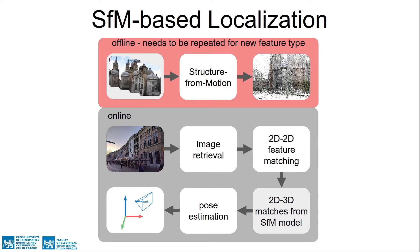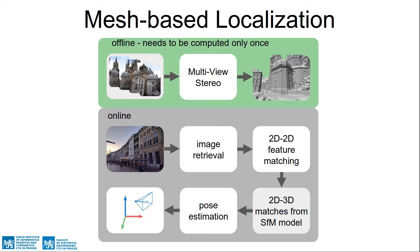In the case of changing the local features to another type, the structure-from-motion based pipeline needs to recompute the whole scene representation, including the expensive matching step between the database images. In the case of a mesh-based pipeline, the representation can be kept even when the feature type changes. The only part that changes is the lifting of the 2D matches to the third dimension, where we use depth maps rendered from the 3D mesh.